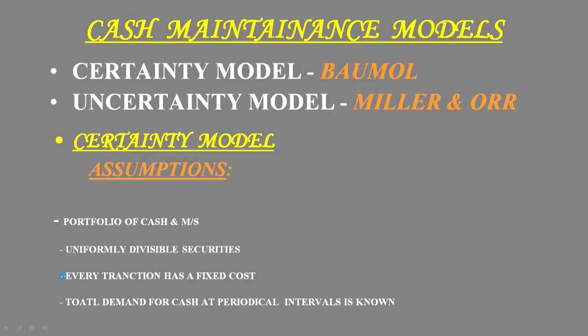The second assumption is uniformly divisible securities. He says that when a firm invests into securities, those securities are uniformly divisible. For example, if one security costs 100 rupees and you want to invest 10,000 rupees, you buy 100 securities. This assumption sometimes may not be true, since market security prices may not always be uniformly divisible.